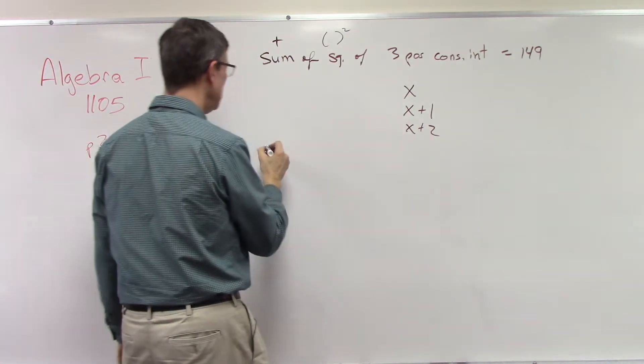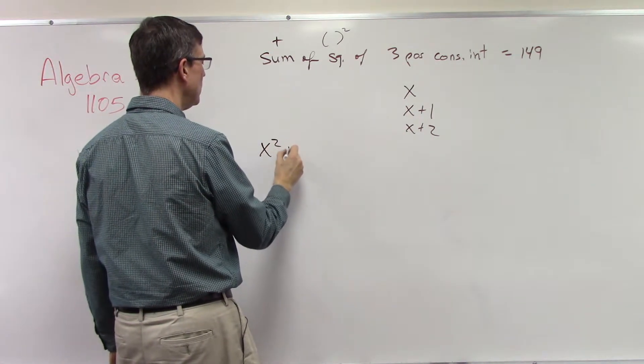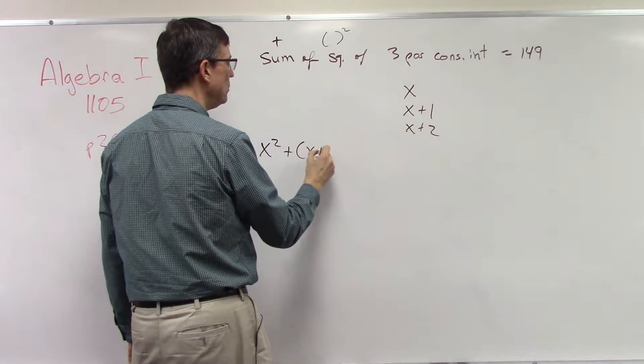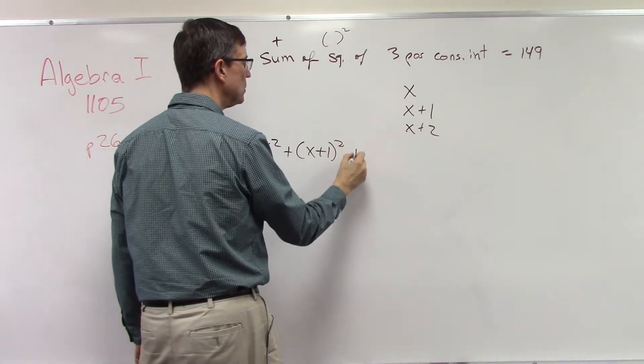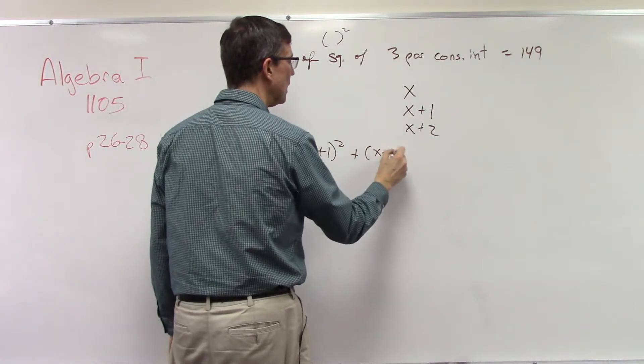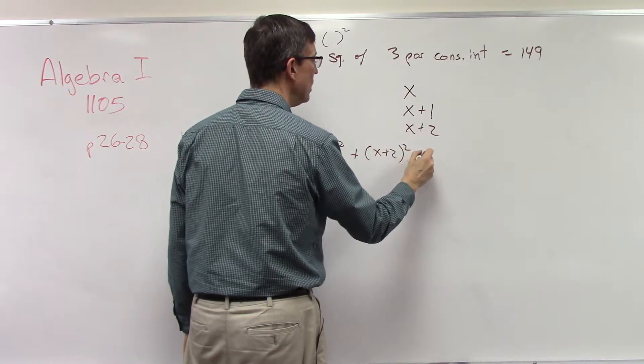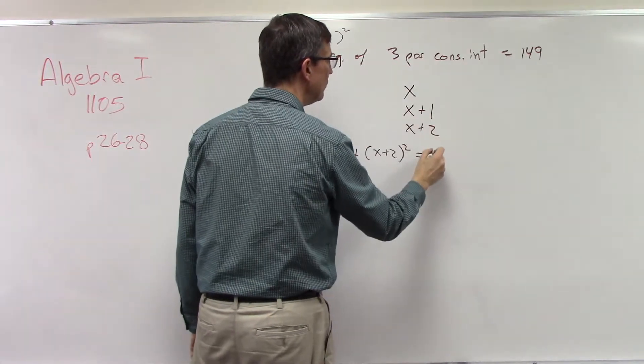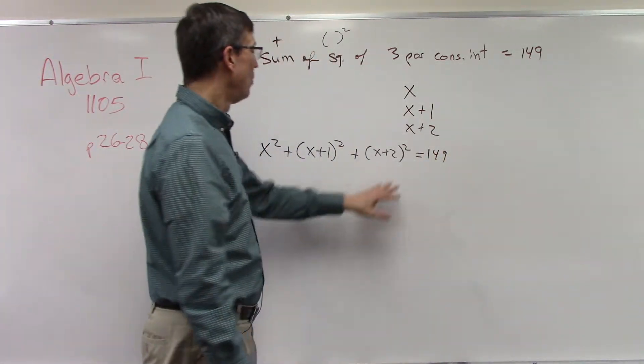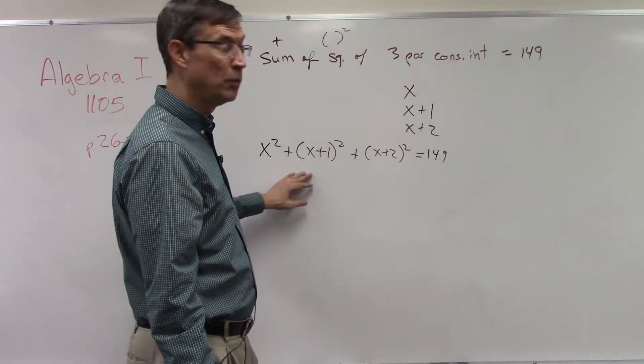So x squared plus (x+1) quantity squared plus (x+2) quantity squared equals 149. Basically, we have the hardest part done. Now we've turned it into symbols and now we can do the FOIL method.